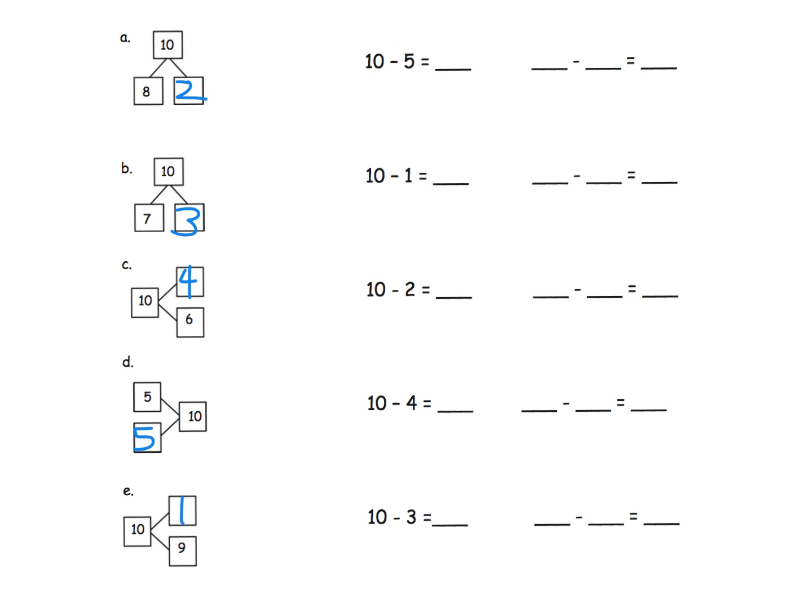We want students filling them out: 10 minus 5 is 5, 10 minus 1 is 9, 8, 6, and 7. No pattern going on there. Then of course we want them to write the extra number sentence. In this case it would be 10 minus 9 equals 1.